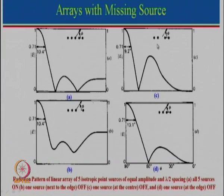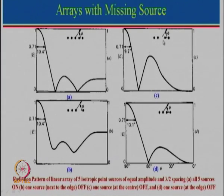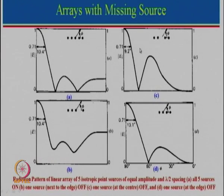Let us pay attention here. What we are doing is feeding 1,1,0,1,1 — so if the central element is 0, we notice the side lobe level increases. Now think the other way: if the central element is fed more power, the side lobe level will decrease and the half-power beam width will increase. We will see in the next slide what happens if we use a non-uniform amplitude.